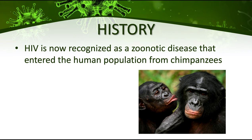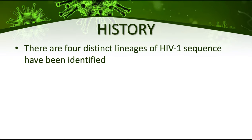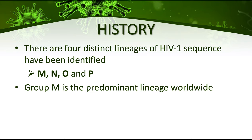It was believed that the HIV virus came from a population of chimpanzees, and these viruses are somehow related to a group of more than 40 simian immunodeficiency viruses, or SIV. HIV has two subtypes: HIV-1 and HIV-2. HIV-1 can be further classified into groups M, N, O, and P. Group M is the predominant lineage of HIV worldwide.